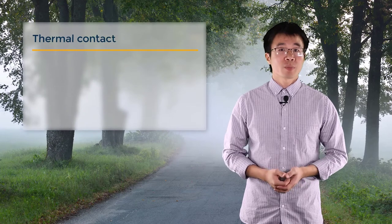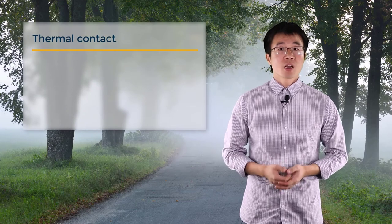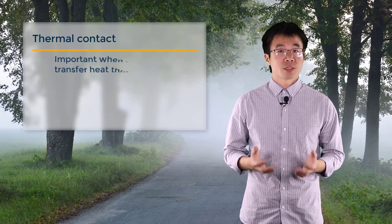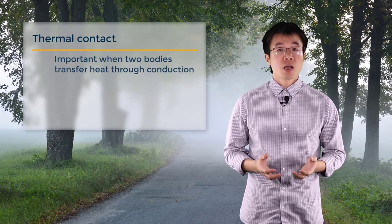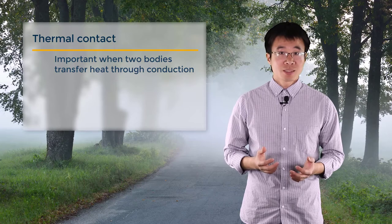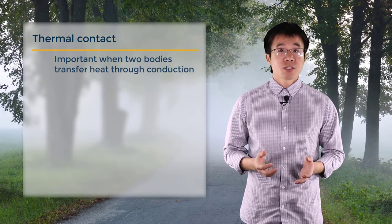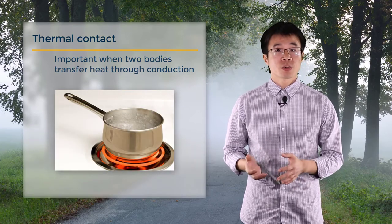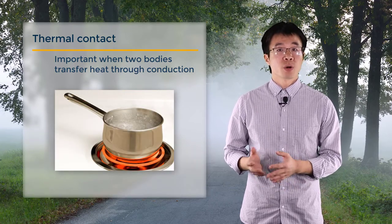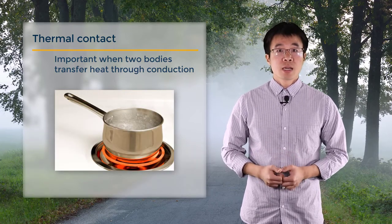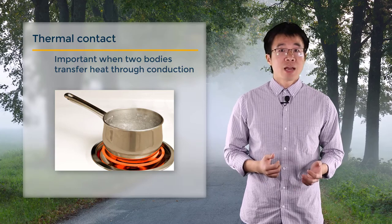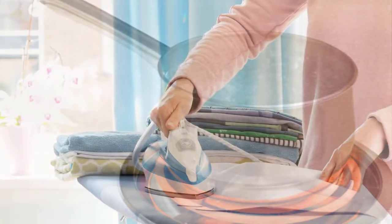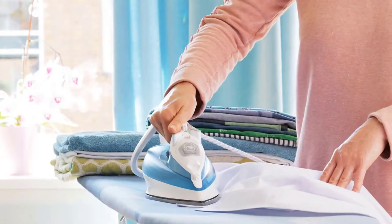It's a crucial phenomenon to consider when two bodies transfer heat through conduction. With thermal contact, the energy from the heating coil can be transferred to the pot to boil water, and the heated iron can be used to make a shirt look nice and smooth.